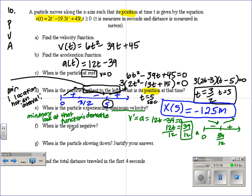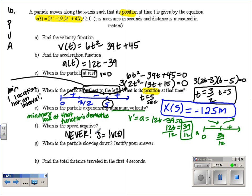When is the speed negative? Never. Tricky, tricky. Remember, speed is the absolute value of the velocity. Velocity can be negative. Speed cannot.